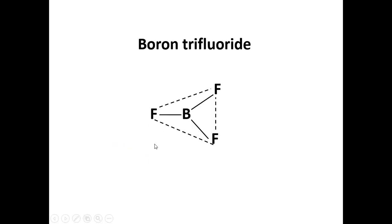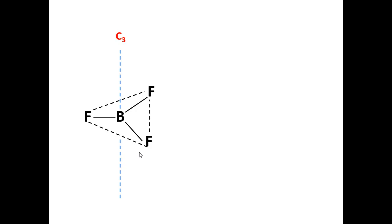Boron trifluoride has a trigonal planar structure. Boron is at the center of the triangle, and the three fluorine atoms occupy the three corners. An axis of symmetry passes through the boron atom, perpendicular to the molecular plane. Rotation about this axis every 120 degrees gives an equivalent appearance, and during a complete rotation of 360 degrees the equivalent appearance is obtained three times — so this is a C3 axis.